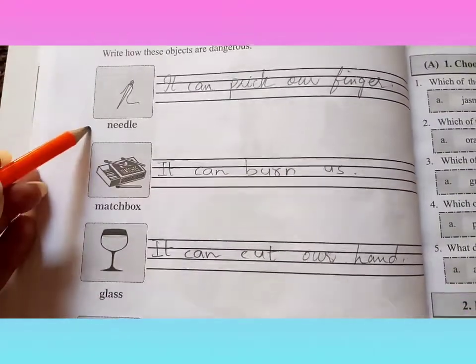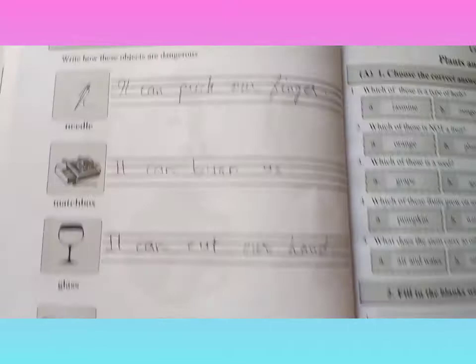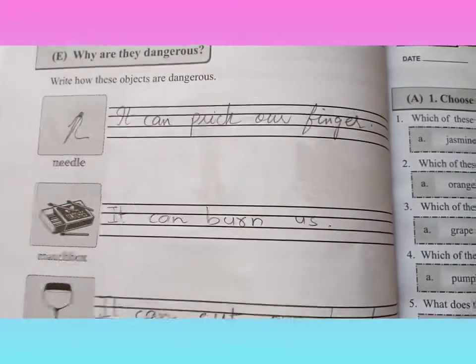You can see some objects like needle, matchbox, glass, pills, tablet and scissors. So what kind of objects can be dangerous?